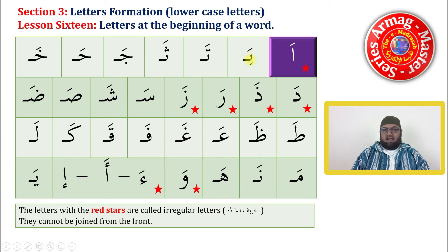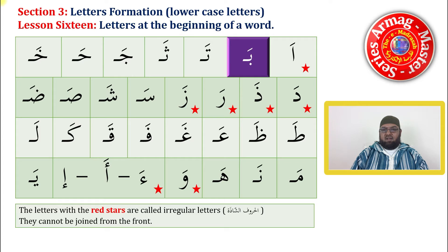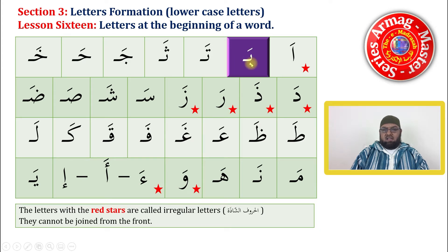Let's look at the letter ALIF. ALIF with the FATHA is 'A' and we said that it cannot be joined from the front, so it is written as normal. Now the letter BA — if we look at it, we start as normal and then we cut it. That cut is to tell us that another letter was supposed to join there, because we are learning how to form the letter in joining. The line from top to bottom with the dot at the bottom — that is BA.